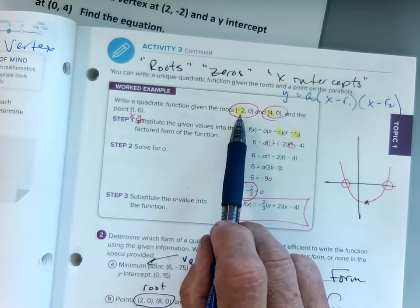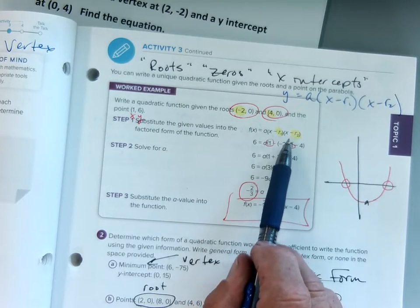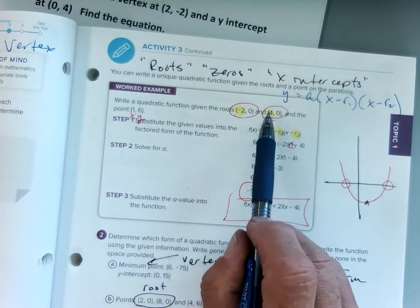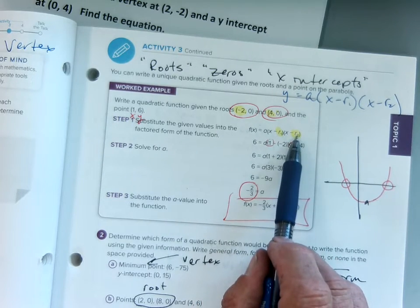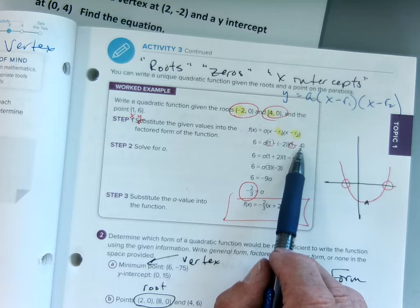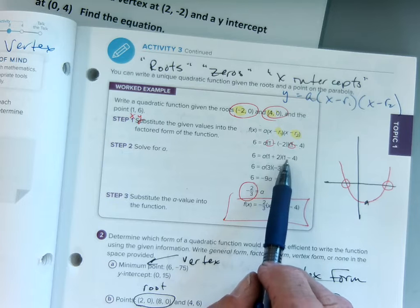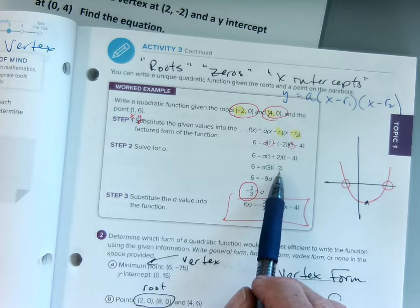We put our negative 2 in for r1. We got a double negative. You guys see the double negative, right? Makes a positive 2. Put the 4 in for our other root. 1 minus 4. We simplified that. So 1 minus minus 2 is a 3. 1 minus 4 is negative 3. Now we need another point.